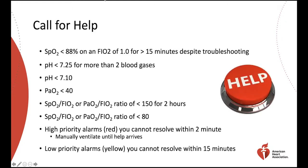Calling for help early is an important crisis resource management principle. Triggers for calling for help include: oxygen saturation less than 88% on FiO2 of 1.0 for more than 15 minutes despite troubleshooting; pH less than 7.25 for more than two blood gases; pH less than 7.1; PaO2 less than 40; P-to-F ratio less than 150 for two hours; P-to-F ratio less than 80; high priority red alarms unresolved within two minutes; and low priority yellow alarms unresolved within 15 minutes.